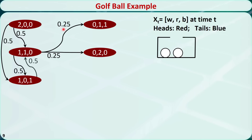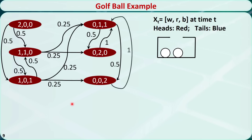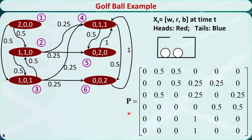Similarly, we can determine other states and the corresponding transition probabilities. Let's mark the states as 1, 2, 3, 4, 5, and 6. Based on this diagram, we can write out the state transition probability matrix. Because we start at state 1, the initial probability distribution places 100% probability at state 1. This is also a Markov chain. I have introduced some basic concepts of stochastic processes and Markov chains. Thanks for watching.